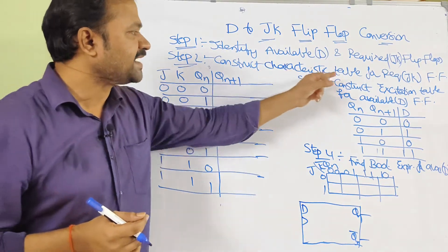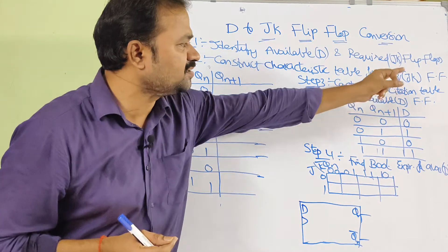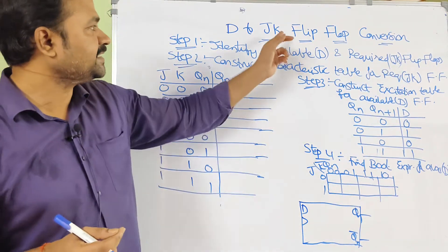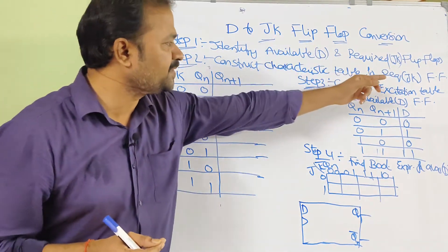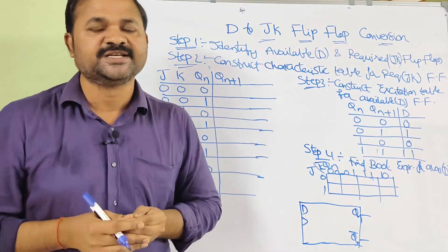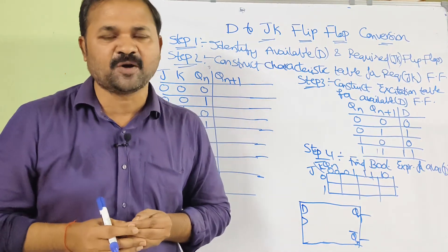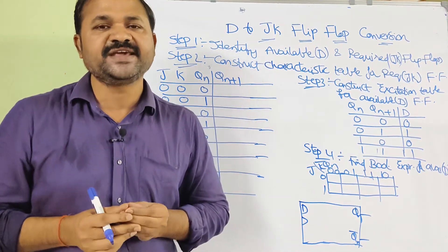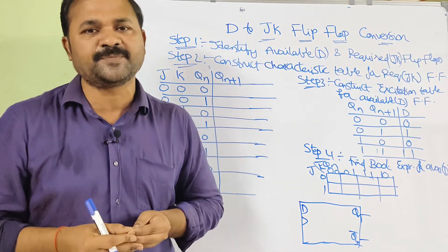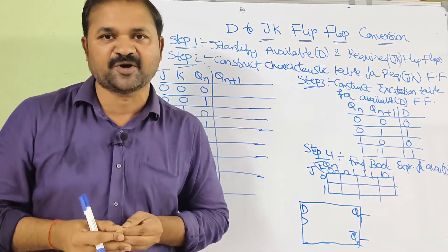Step 2: construct the characteristic table for the required flip-flop. Here the required flip-flop is the JK flip-flop. Step 2 is based upon the required flip-flop, whereas steps 3 and 4 are based upon the available flip-flop.